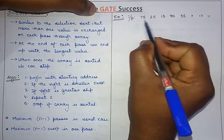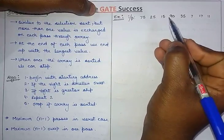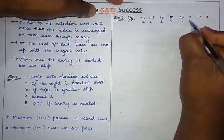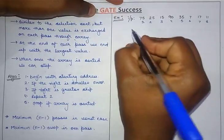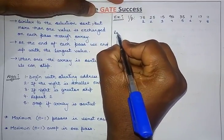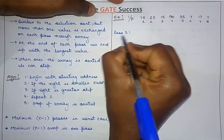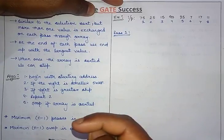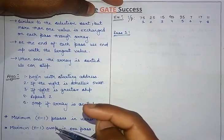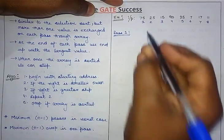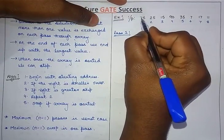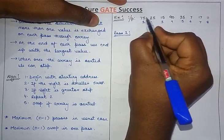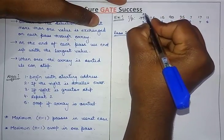Let's understand it with the help of an example. As you can see, in this example there are eight values. As I have told you, what we have to do is swap if the right value is smaller. You can see here 75 is on the left and 25 is smaller on the right — the right value is smaller, so we have to swap it with 75.